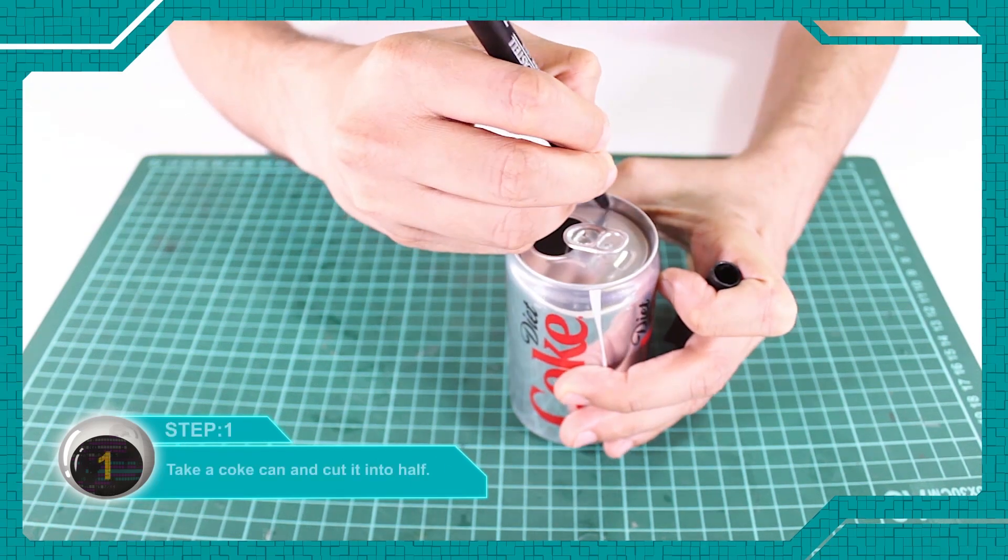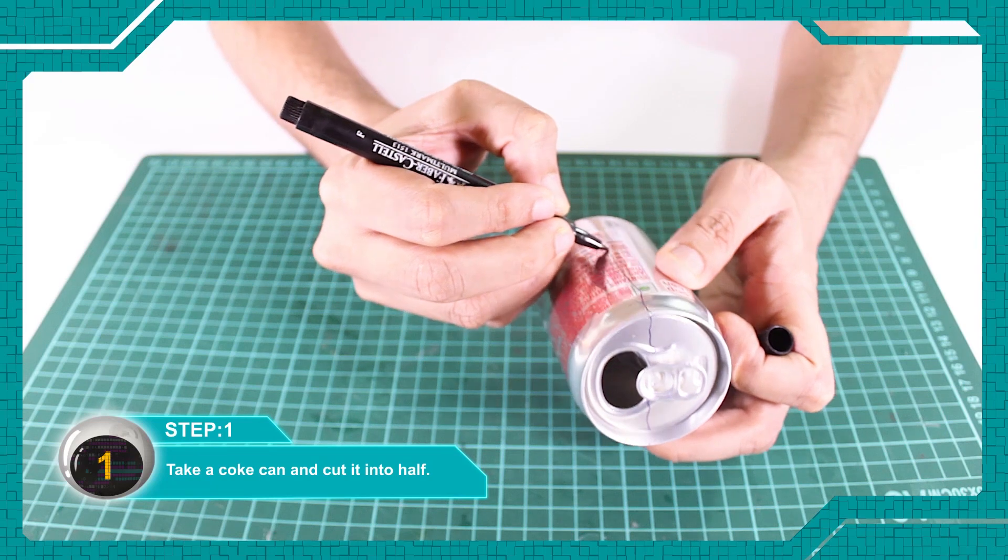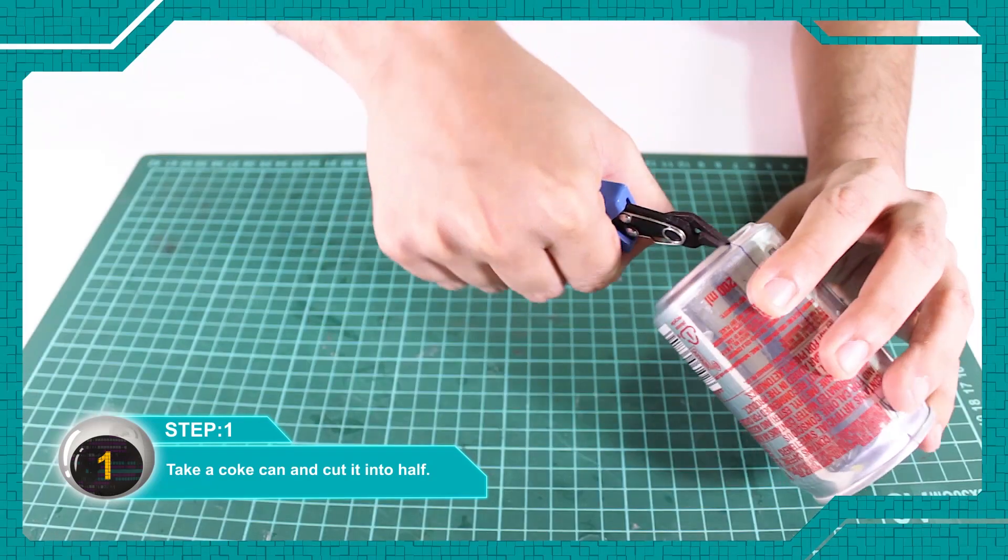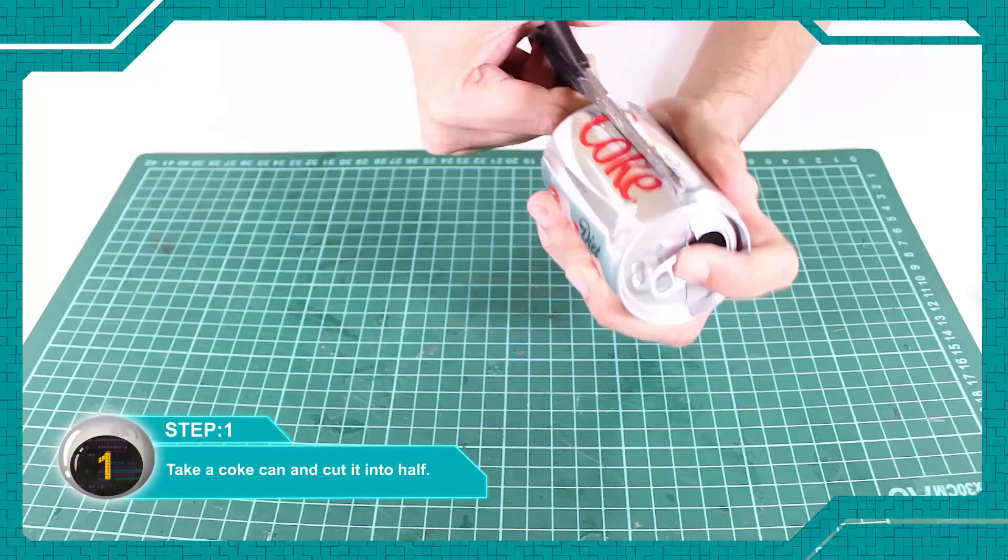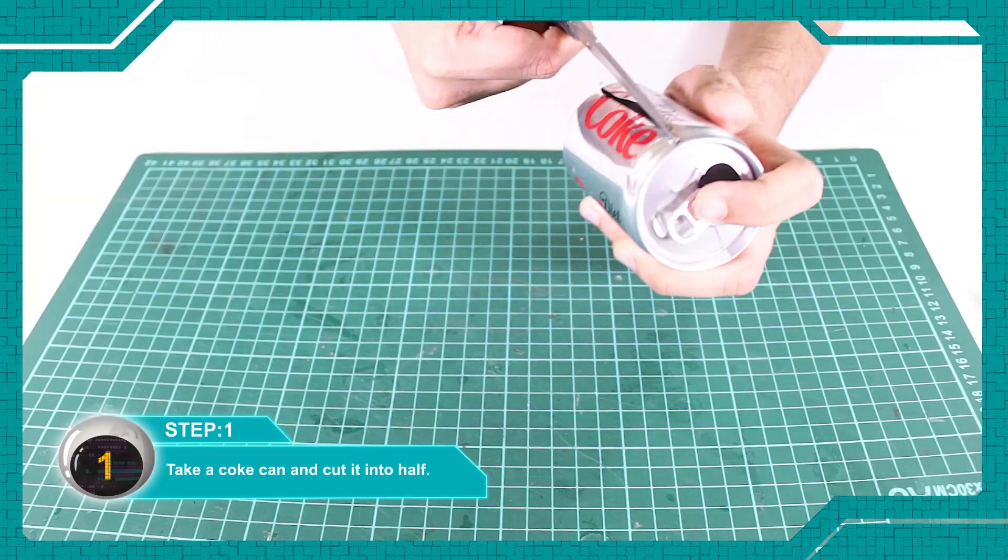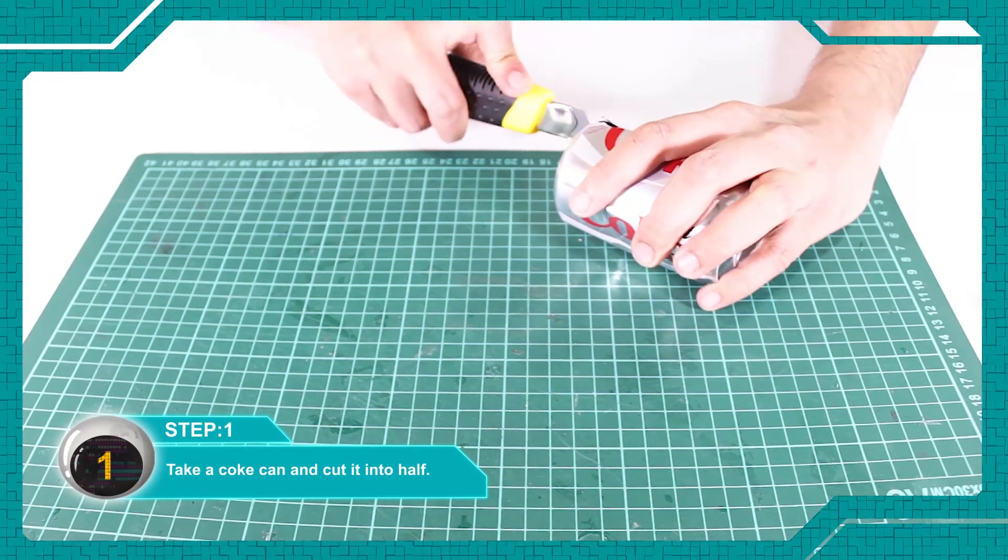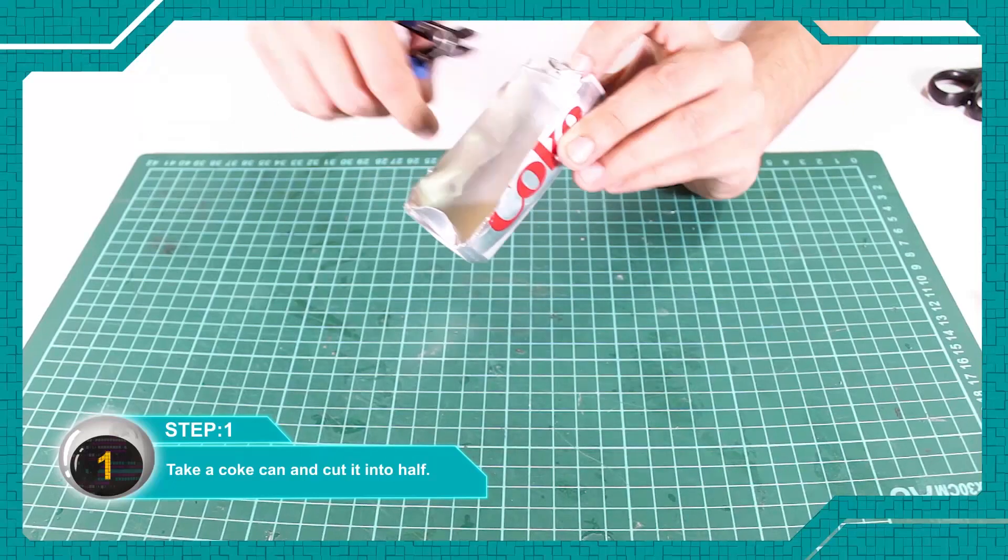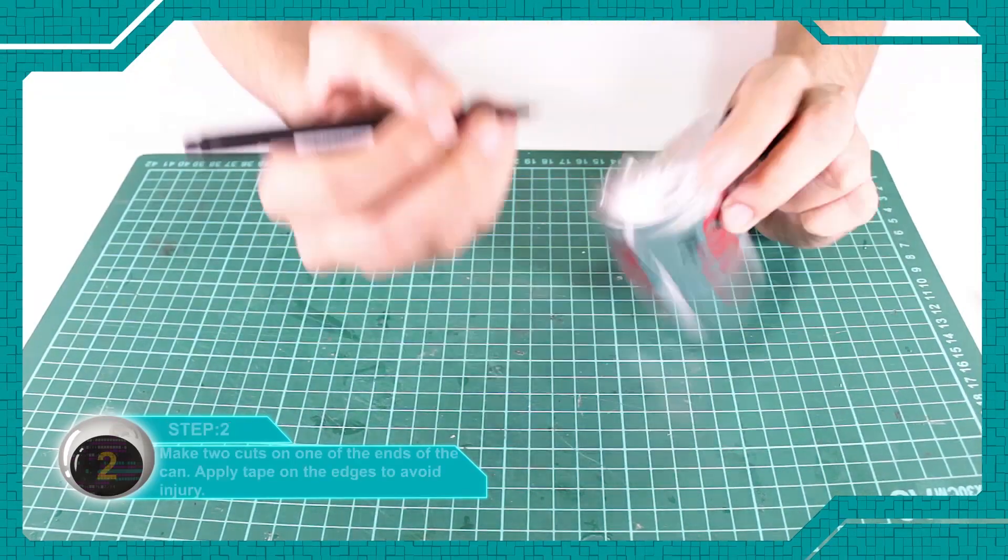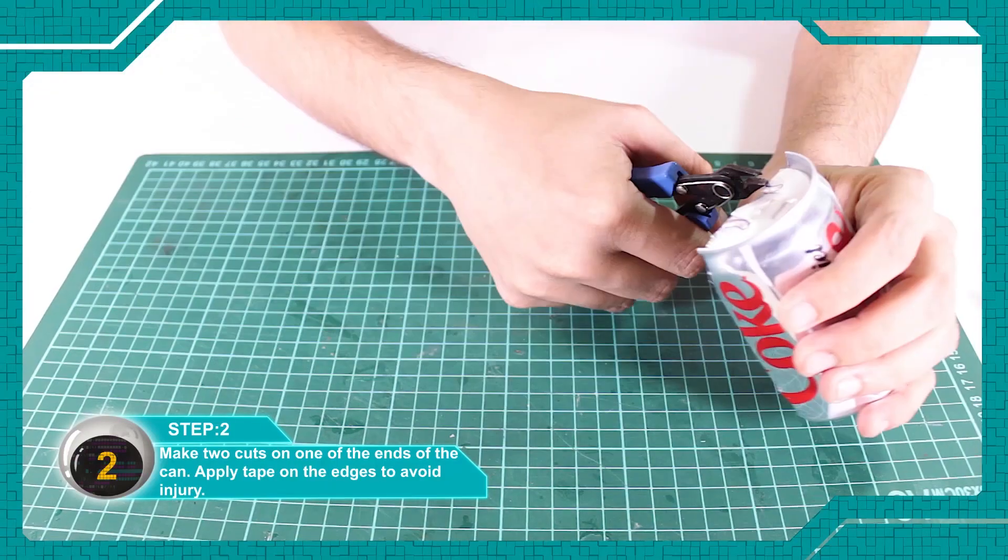Take an empty can and cut it in half. Make two cuts on one side of the can.